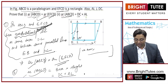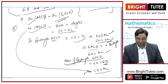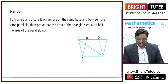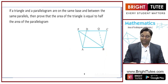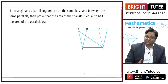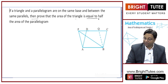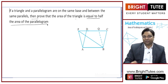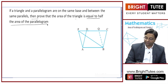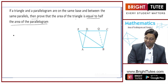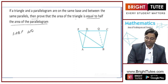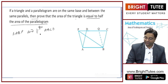So these are the ways you can proceed with this example. Next: if a triangle and a parallelogram are on the same base and between the same parallels, then prove that the area of the triangle is equal to half the area of the parallelogram. Let the triangle be ABP and the parallelogram be ABCD.